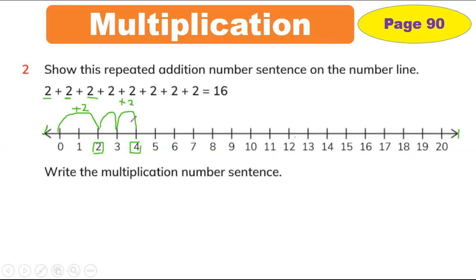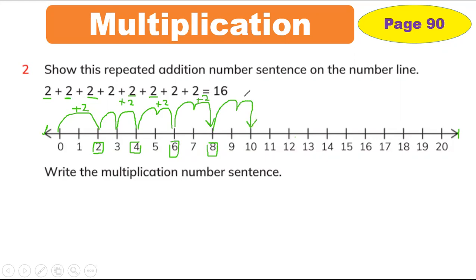Again we have the third number — jump 2 times: 1 and 2. So plus 2 gives us 6 — because 4 plus 2 is 6. Then jump 2 more: 1 and 2. Don't go to 7, jump exactly 2. 6 plus 2 is 8. Next jump: 1 and 2. 8 plus 2 is 10. Then 1 and 2 more — 10 plus 2 is 12.